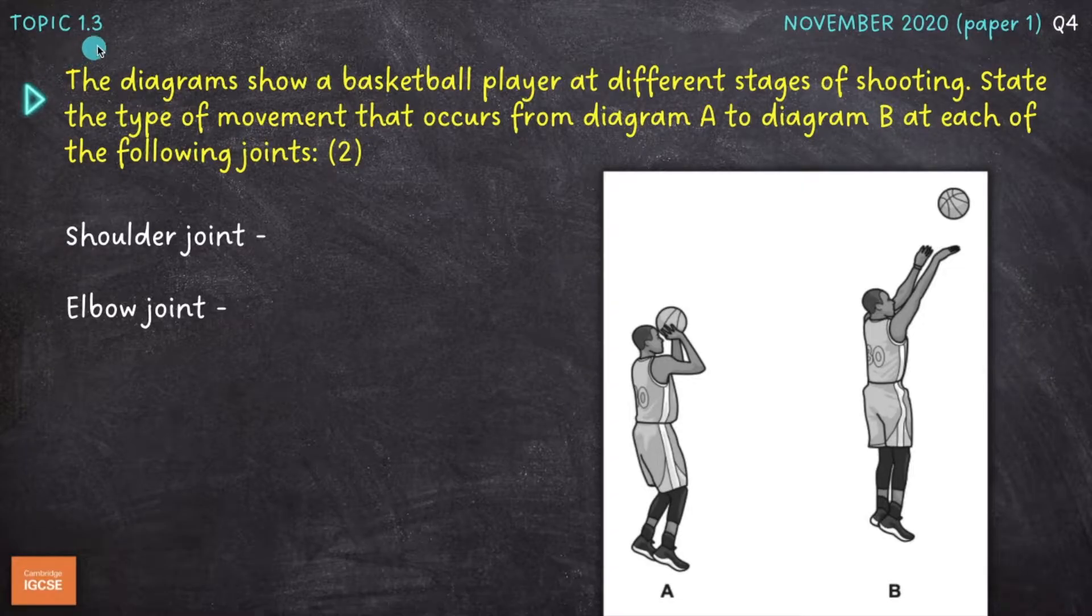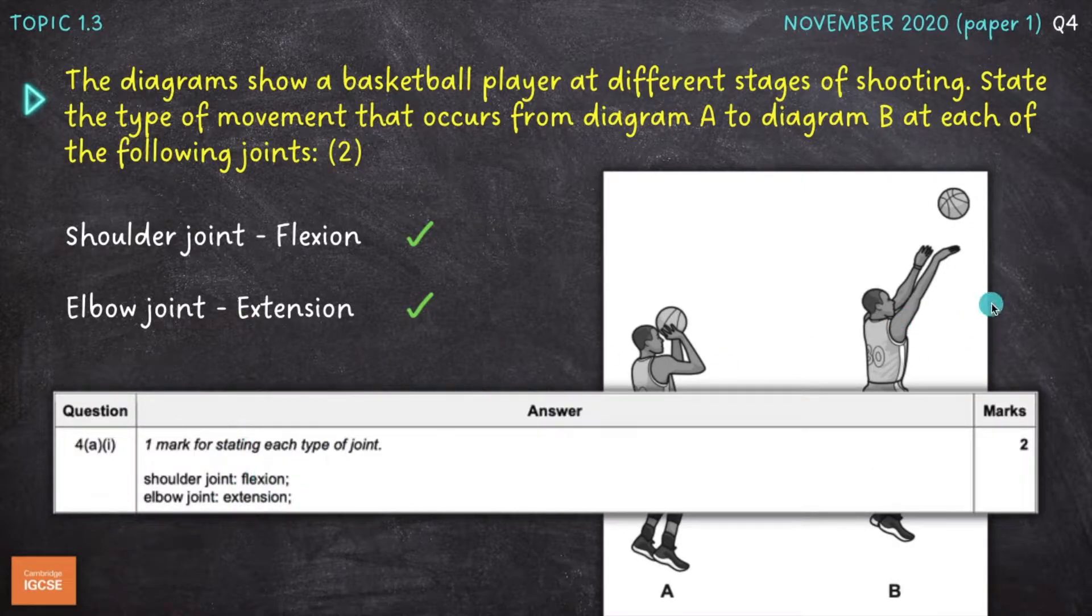Question number two is on topic 1.3, movements at joints. The diagrams show a basketball player at different stages of shooting. State the type of movement that occurs from diagram A to diagram B at each of the following joints, which type of movement occurs at the shoulder joint and the elbow joint. The shoulder joint here, we can see that the arm is becoming raised up as the performer shoots, and that indicates flexion. The opposite movement would be extension, which would be when the arm moves downwards and backwards at the shoulder joint. And then at the elbow joint, we have extension, because the elbow is becoming straightened, or the angle at the joint increases during that movement.